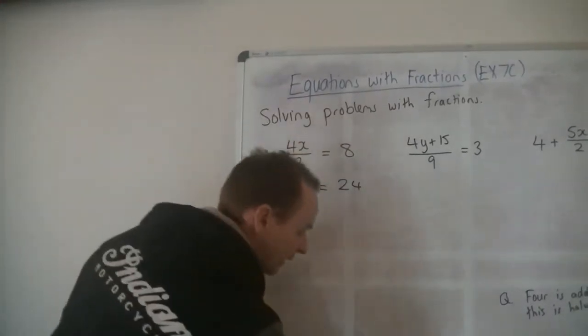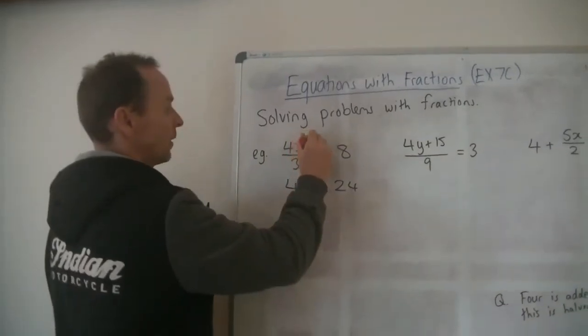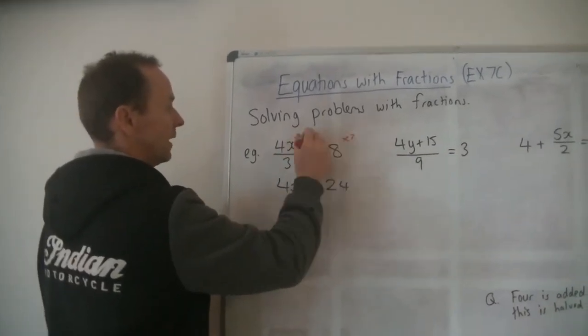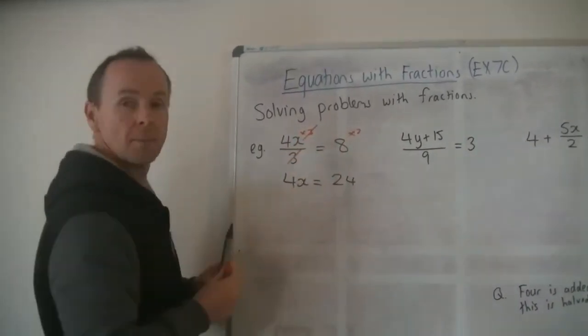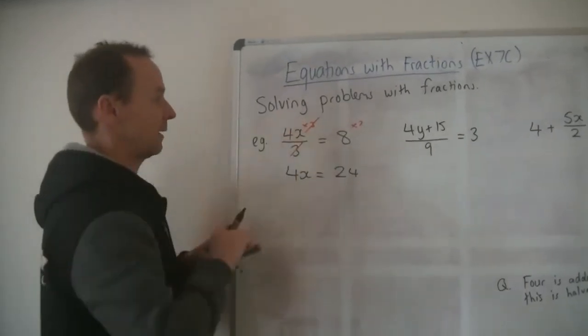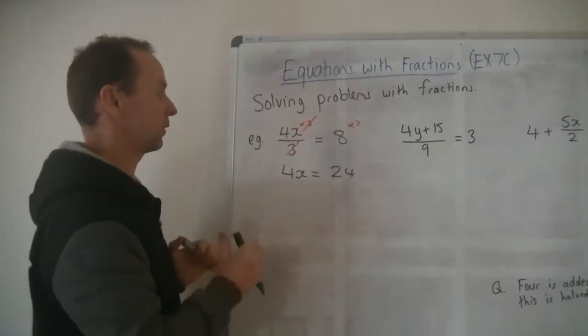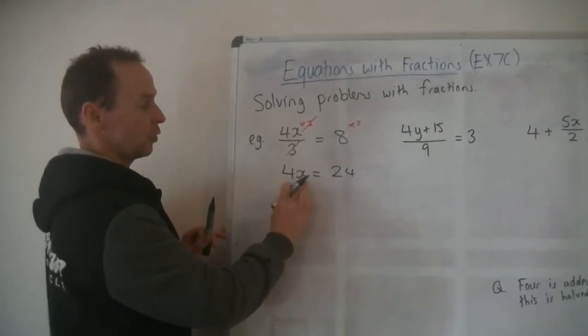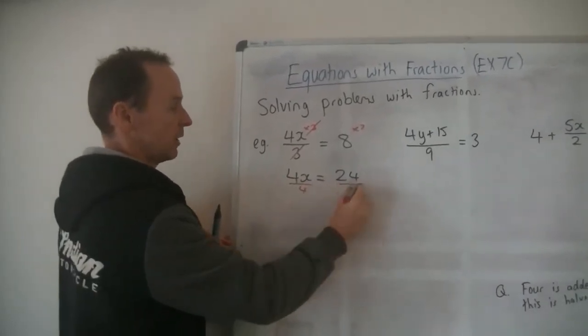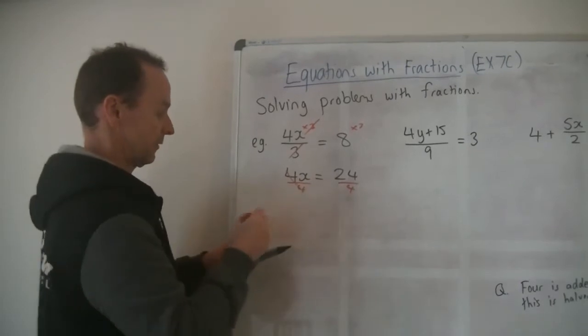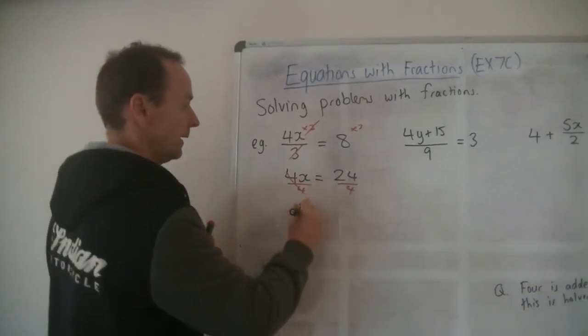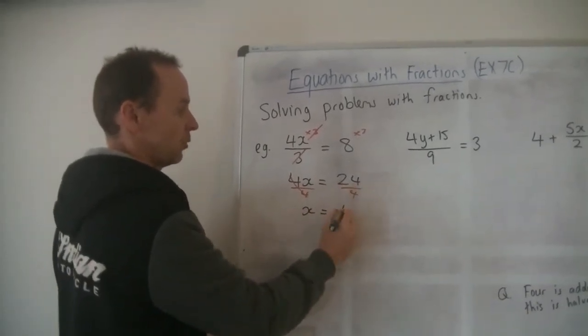If you want to show the workings out, you can. I'll just grab a different color, times by 3, times by 3, and the 3's cancel. But you do not need to do that bit of working out, what I've done there in red. Next step, it says 4 times x, so you divide both sides by 4, the 4's cancel.